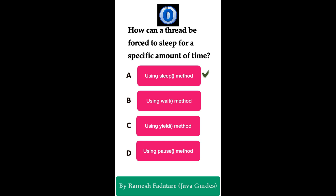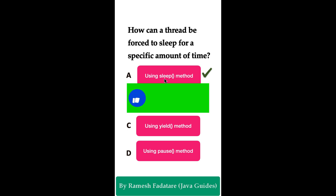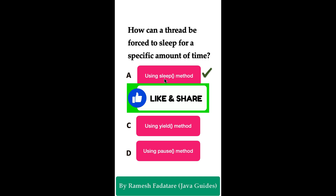The correct answer is Option A: using the sleep() method. In Java, the sleep() method is a static method that belongs to the Thread class. This sleep() method is used to force the execution of the current thread for a specific number of milliseconds. The sleep() method is quite useful for creating delays in program execution or managing the timing of thread operations.